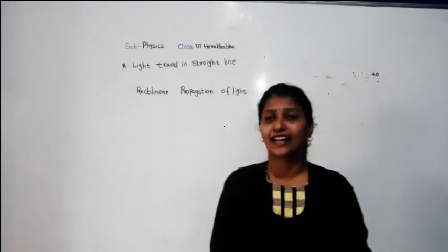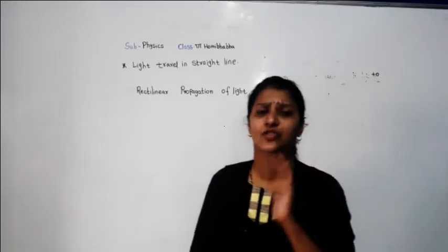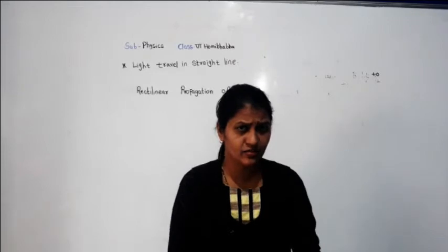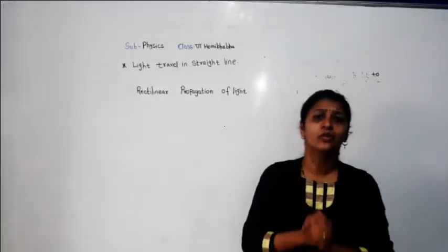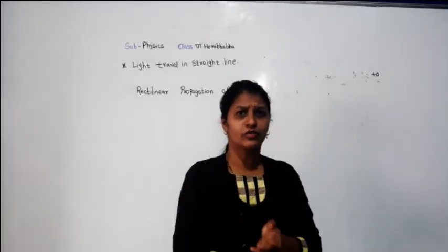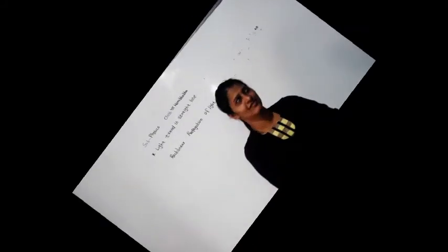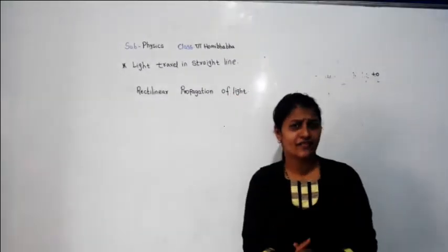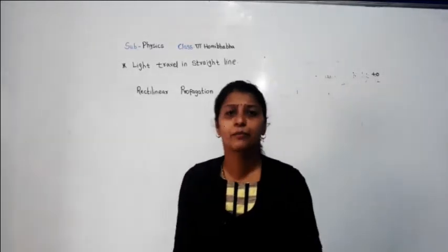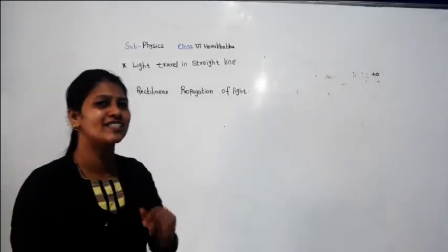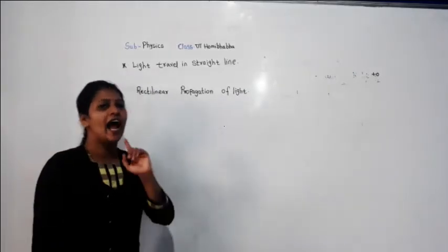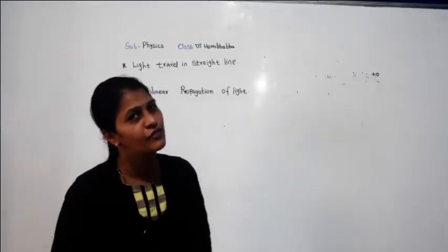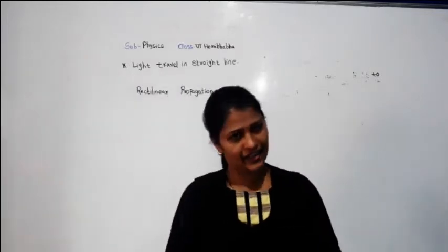I am telling you that light always travels in a straight line. Can you just guess — can you determine or prove why light always travels in a straight line? Yes, we will prove with an activity that light always travels in a straight line, and that phenomenon is called the rectilinear propagation of light. So we will do one activity.